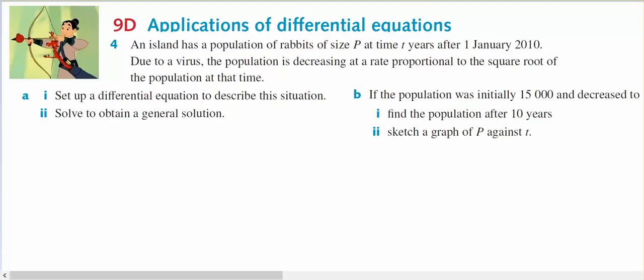This is for Year 12 specialists. It comes out of 9D, applications of differential equations, question number four. We have an island of rabbits and after the 1st of January 2010, due to a virus, the population is decreasing at a rate proportional to the square root of the population.